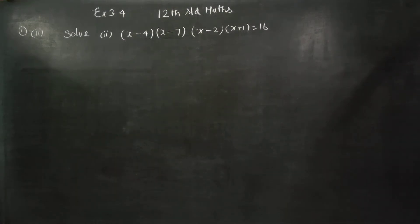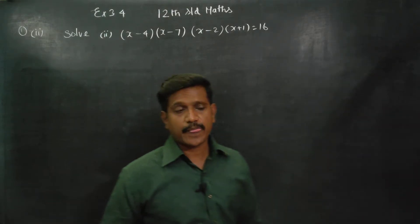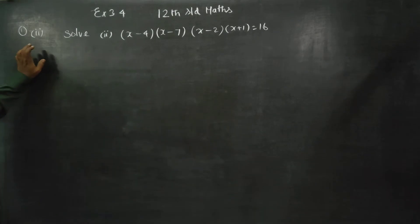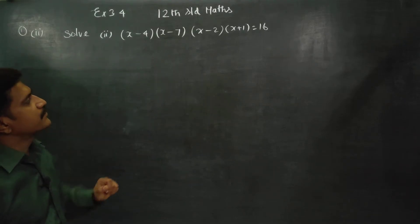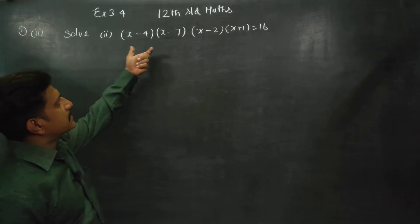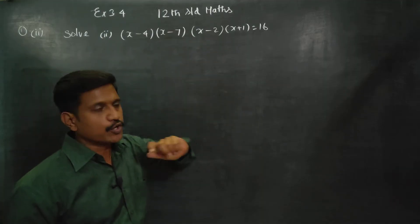Dear Toll Standard students, I am Metro Karanagaran. In exercise no. 3.4, sum no. 1 second subdivision, solve this. Partly factored polynomials.